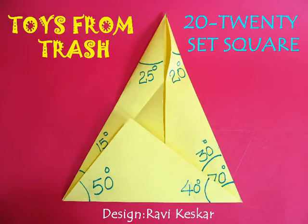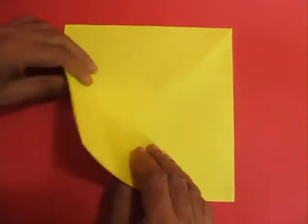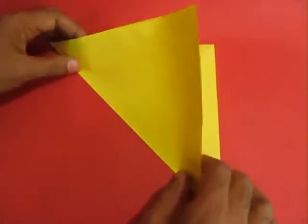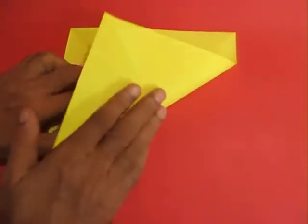We are going to make a very beautiful paper protractor with which you can measure 20 different kinds of angles. Take a paper about 20 cm on the edge and fold the diagonal.